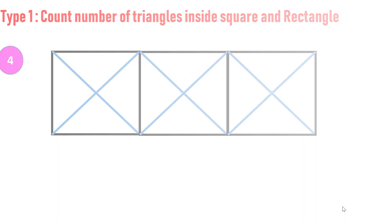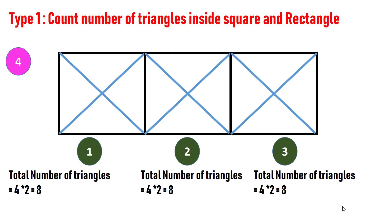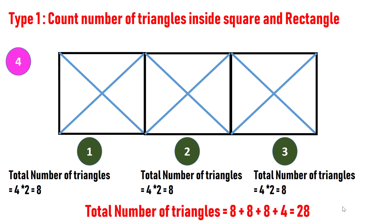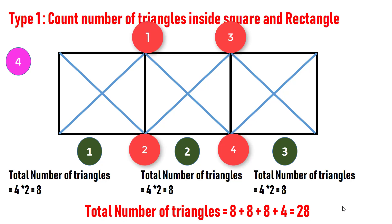In this figure, there are three squares and each square has two diagonals and four blocks. Hence, total number of triangles in each square is four into two, which is eight. Also, containing three squares will yield additional four triangles as shown here. Hence, total number of triangles is eight plus eight plus eight plus eight plus four, which is 28.